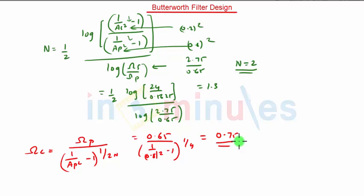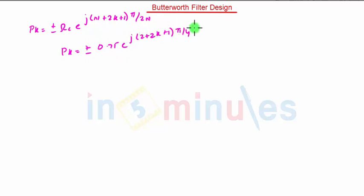Calculation of the pole is done by using the similar formula that is plus minus omega C E raise to J bracket N plus 2K plus 1 pi by 2N. So Pk is given as plus minus 0.75 E raise to J 2 plus 2K plus 1 pi by 4. So this gives us Pk is equal to plus minus 0.75 E raise to J 3 plus 2K pi by 4.